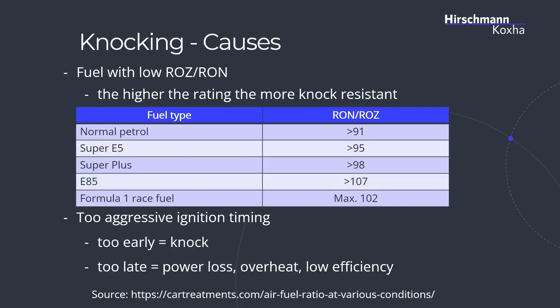Another reason is the fuel itself — it really depends what fuel you drive. Normal petrol, which we don't really have in Europe, at least in Germany, has an octane rating of 91. This octane rating basically describes how knock-resistant the fuel is. The higher the rating, the more knock-resistant the fuel is going to be. And the more knock-resistant the fuel is, the more power you can get out of it.